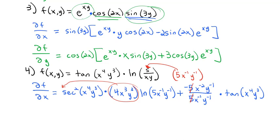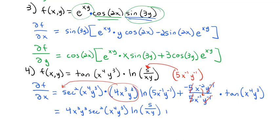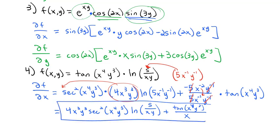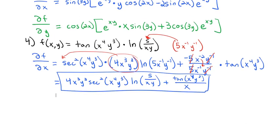Cleaning up: move 4x³y³ to the front; the 5 over 5 reduces out, and y⁻¹ reduces out, leaving just x⁻¹ which becomes a single x in the denominator. So the simplified partial of f with respect to x is 4x³y³ · sec²(x⁴y³) · ln(5/xy) + tan(x⁴y³)/x.